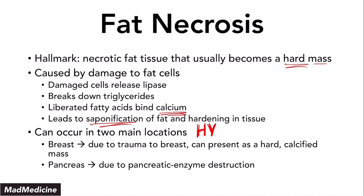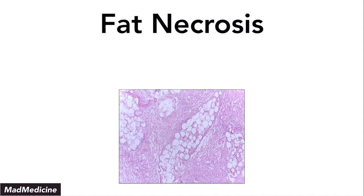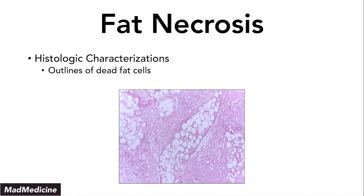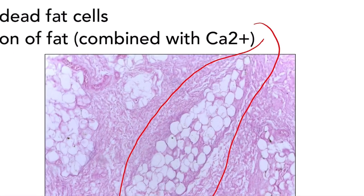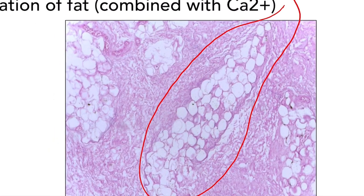On the histologic slide for fat necrosis, you're going to see outlines of dead fat cells without any nuclei, and you're going to see saponification with calcium being bound to that region. As you can see in the slide, these are dead fat cells with no nuclei, which is a hallmark of fat necrosis.